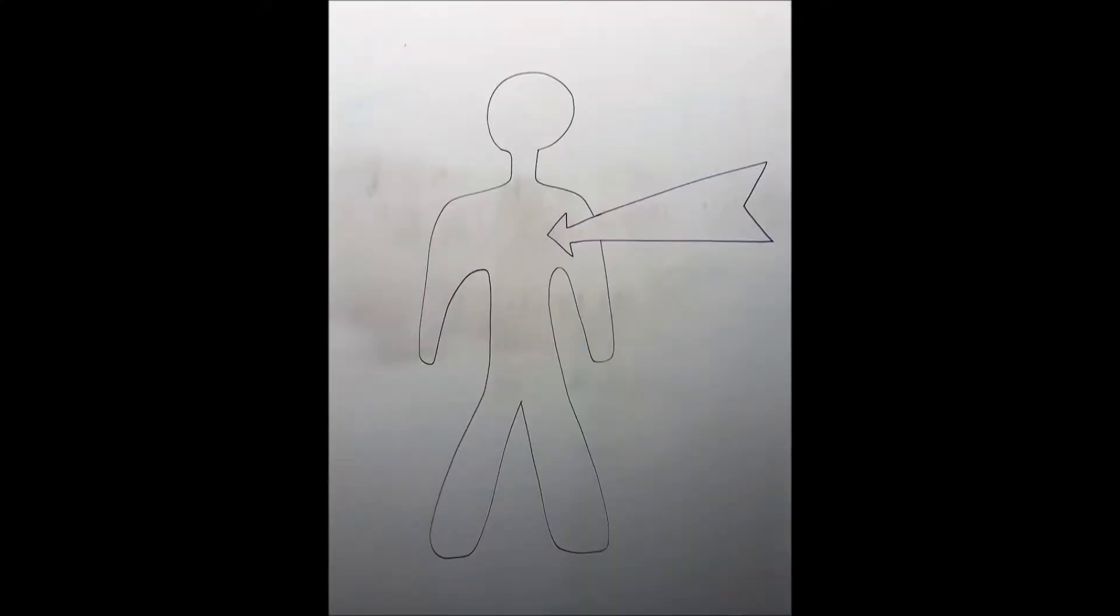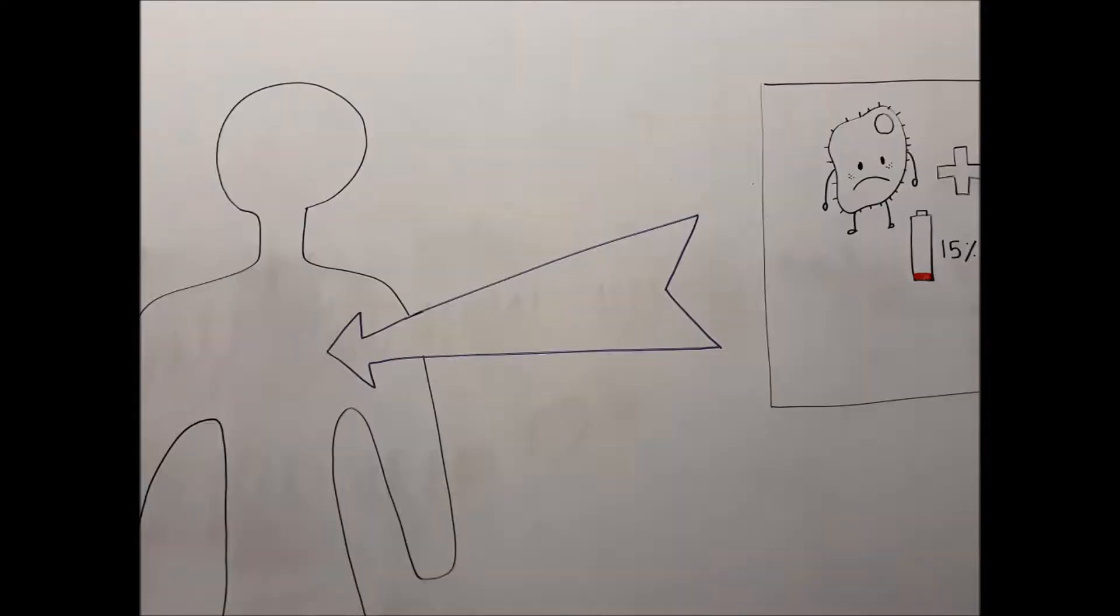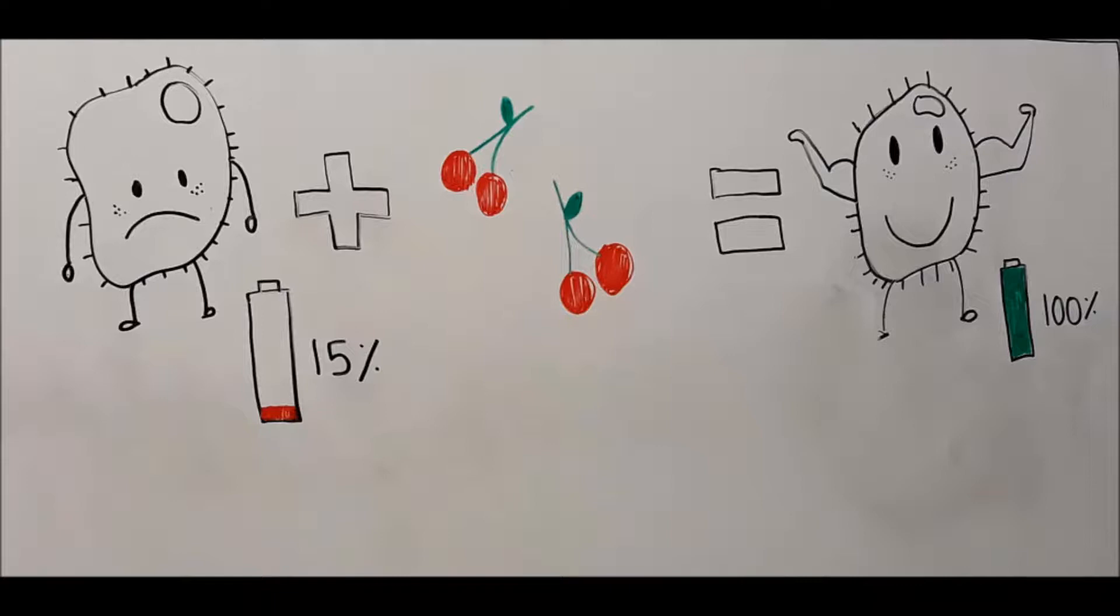As we learned in the previous lesson, our whole organism is composed of a huge amount of little livings called cells. Those cells, as all livings of the world, need something to keep alive. That something is called energy.